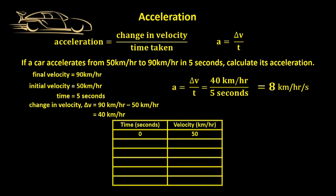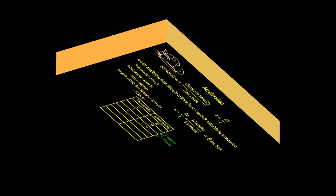We can draw up a little table. At the start, the car was travelling at 50 km per hour. After accelerating for 1 second, it was travelling at 58 km per hour. After 2 seconds, it was travelling at 66 km per hour.